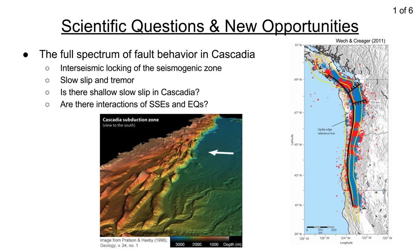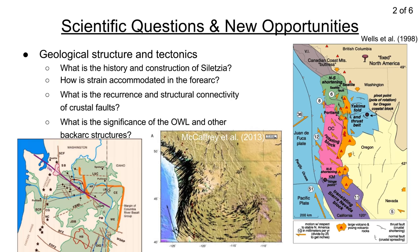A key research theme is the spectrum of fault behavior in Cascadia. Big questions include where locking is occurring offshore and the implications for seismic hazard. Slow slip and tremor have been a major focus. A future-looking question is whether slow slip events occur in the shallow portion near the trench — we have no observations yet, though we see it in other subduction zones. If shallow slow slip exists in Cascadia, how might it interact with seismic activity in the locked zone?